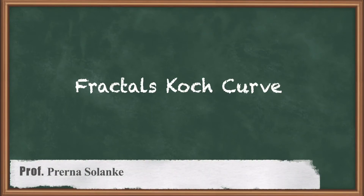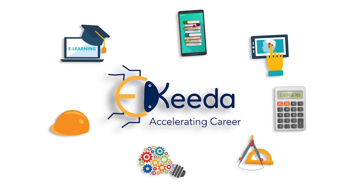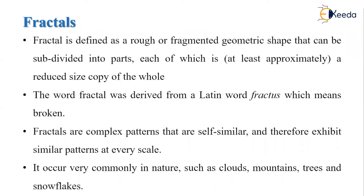Koch curve is one of the most commonly used examples of a fractal. A fractal is defined as a rough or fragmented geometric shape that can be subdivided into different parts, each of which is a reduced-size copy of the whole object. In simple words, to describe any object we have mathematical formulas, but if we want to represent natural objects such as clouds, trees, or lightning, there is no mathematical formula available — so for such cases we use fractals.